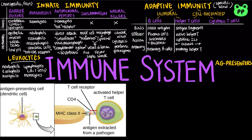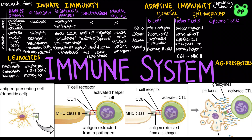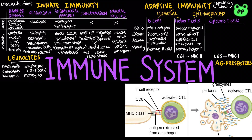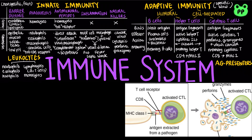The surface protein on helper T cells is known as CD4, which binds to the class 2 MHC molecule found on specialized antigen-presenting cells. Cytotoxic T cells have the surface protein CD8, which binds to class 1 MHC molecule present in nearly every nucleated cell. The cytotoxic T cell receptor binds the antigen fragments on the MHC molecule, activating the cytotoxic T cells into effector cells. Activated cytotoxic T cells secrete perforins and granzymes, providing immunity against viruses and cancer, and also give rise to memory cytotoxic T cells. Antigen-presenting cells that have MHC molecules include dendritic cells, macrophages, and activated B cells.